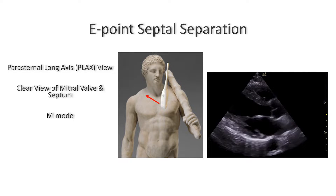First things first, the E-point septal separation or EPSS is measured at the parasternal long axis view. I will leave a link in the description if you wish to refresh your memory on how to get the parasternal long axis view. When measuring the EPSS it's important to make sure that you have a clear view of the mitral valve and the septum. Once you have that, the next thing you're going to need is M-mode on your echo.